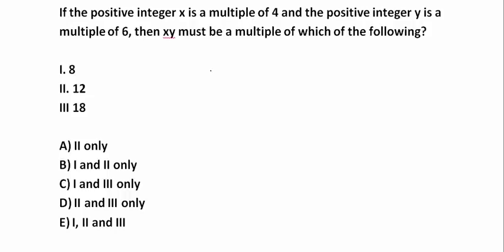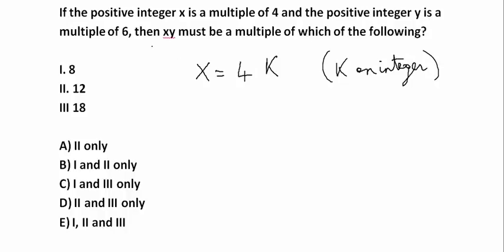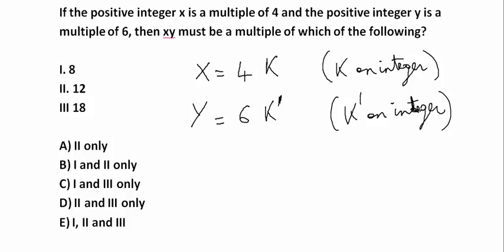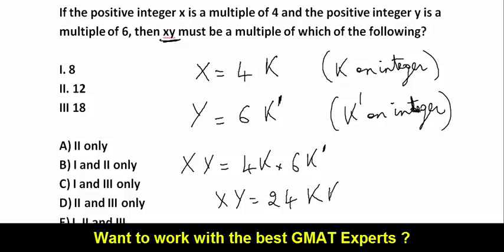x is a multiple of 4, so x is equal to 4 times k, where k is an integer. And y is a multiple of 6, so y is equal to 6 times k prime, where k prime is also an integer. So now we are talking about x times y — x times y is equal to 4k times 6k prime, and this product here is an integer.